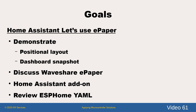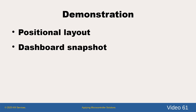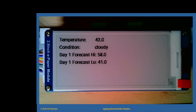Let's look at the demonstration. Home Assistant is running with an ESPHome device. We are looking at the Waveshare 2.9-inch ePaper display showing Home Assistant data in a positional layout. We will wait long enough so you can see the refresh.